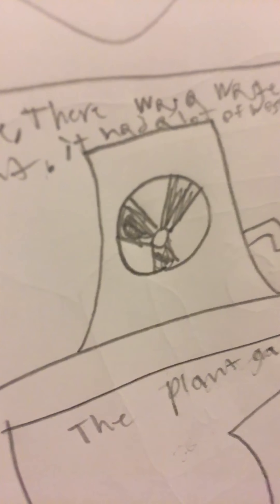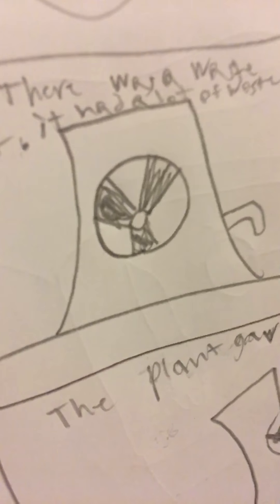Once there was a waste plant, it had lots of waste. That's a radioactive sign, Eli. I see where I messed up. All right. Then a truck came and then the plant gave it some waste. And then, but a barrel fell into the cotton garden. Then the cotton grew.